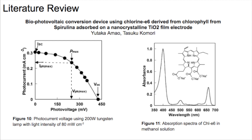Amau and Komori examined the usage of chlorophyll extracted from spirulina in a dye-sensitized solar cell using titanium dioxide as the semiconductor. Their DSSC had an open circuit voltage of almost 450 millivolts and a short circuit current of 0.3 milliamps. Figure 11 shows the absorption spectrum for the dye used in this solar cell.